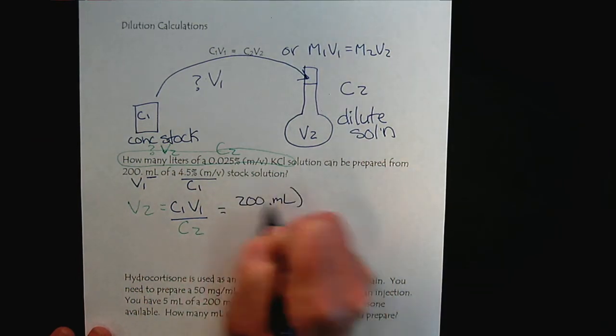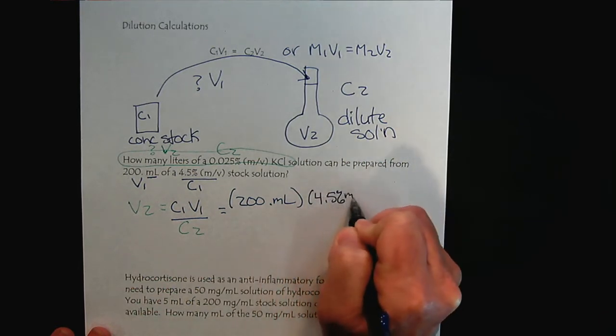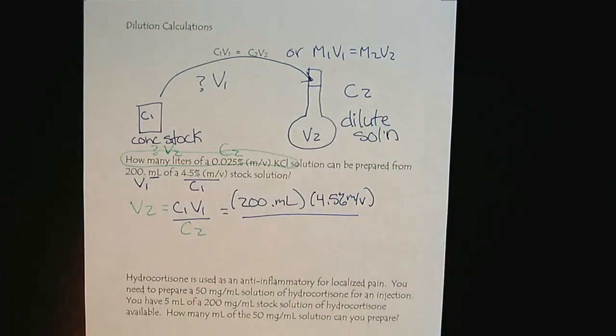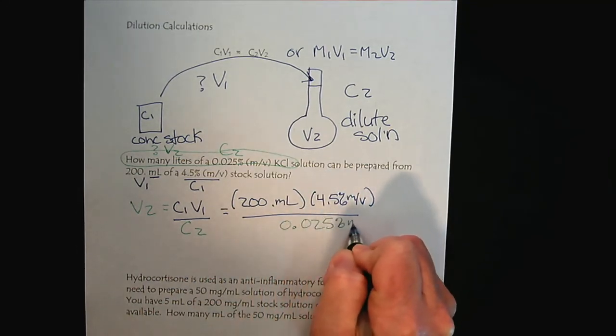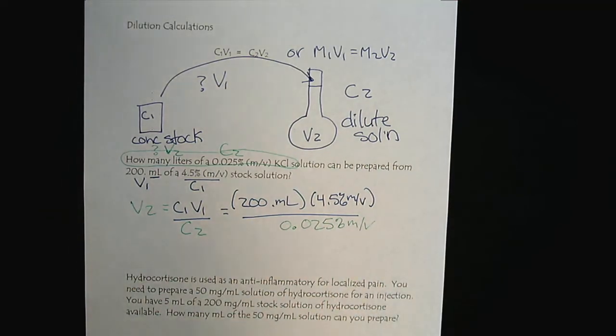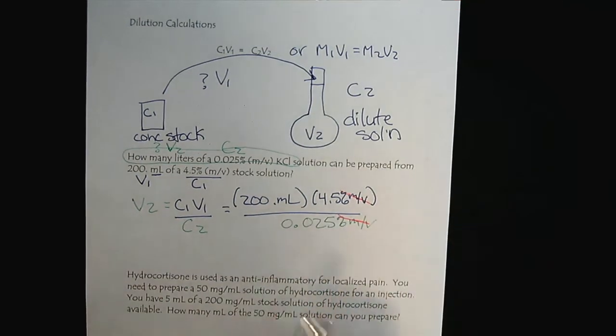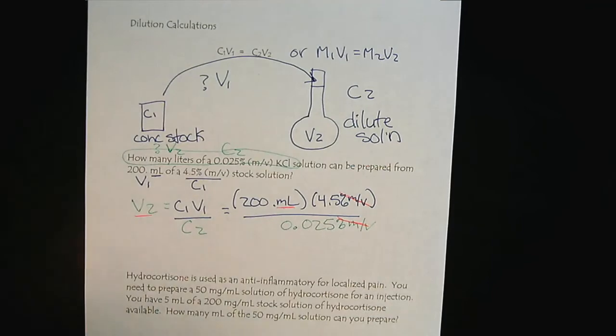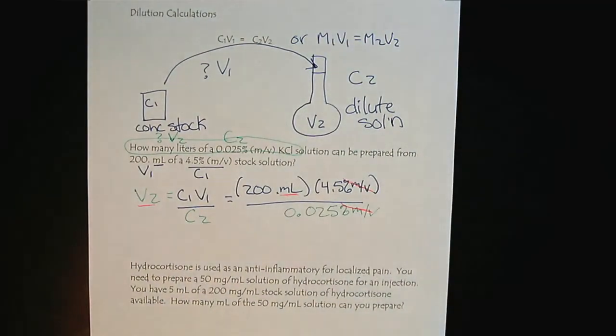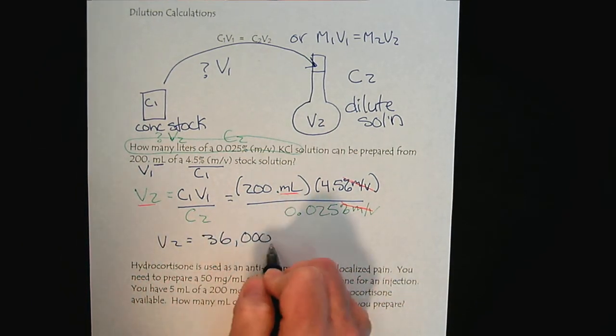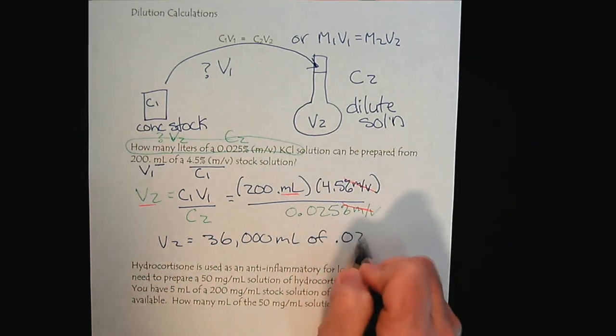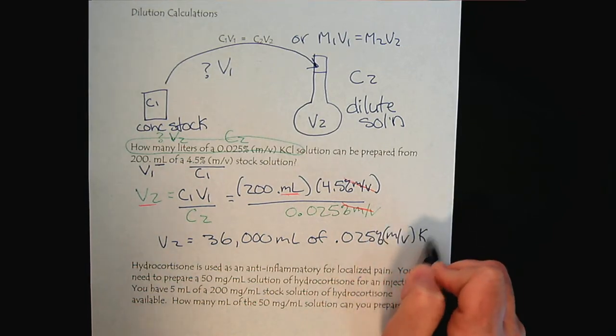200 milliliters and 4.5% mass volume divided by 0.025% mass volume. Notice how the units are helpful. The percent mass volumes cancel, and we're left with milliliters, which we're trying to calculate a volume so that works out perfectly. We punch those numbers into our calculator. The calculator tells us that we would be able to produce 3,600 milliliters of a 0.025% mass volume potassium chloride solution.